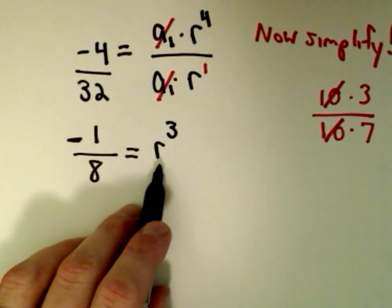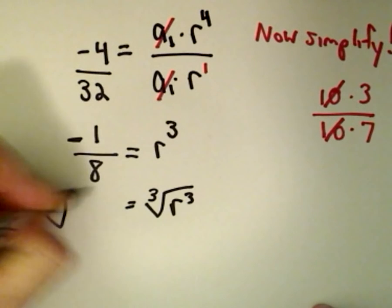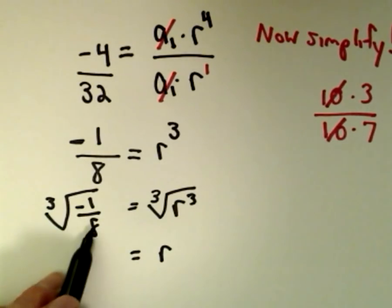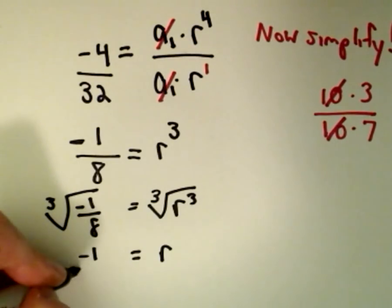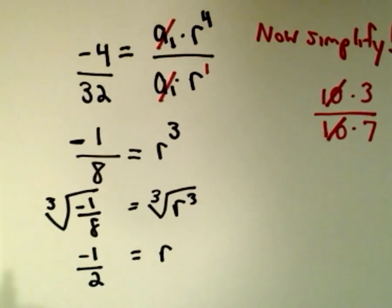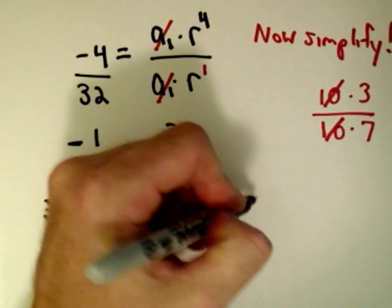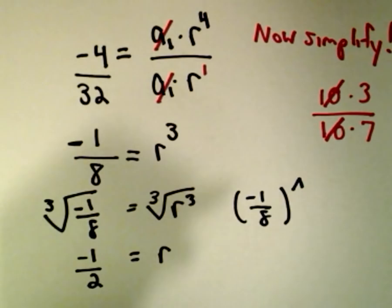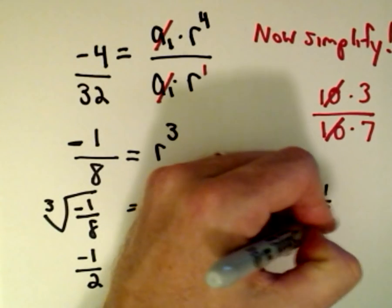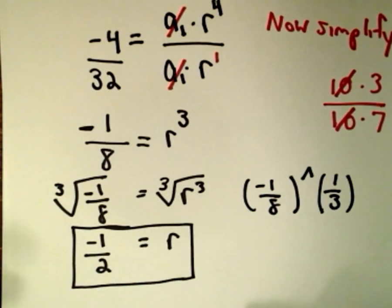Now I need to find r, so I'm taking the cube root of both sides. What number multiplied by itself three times gives negative 1 eighth? Negative 1 times negative 1 times negative 1 is negative 1, and 2 times 2 times 2 is 8. So the cube root of negative 1 eighth is negative 1 half. On a calculator you'd do negative 1 eighth raised to the 1/3 power and get negative 0.5. So our r value is negative 1 half.